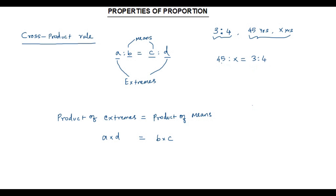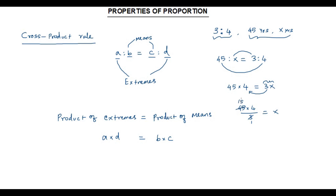We can apply the cross product rule to find the value of X. The product of extremes is 45 times 4, which is equal to the product of means, that is X times 3, giving us 3X. My aim is to get the value of X, so I bring 3 to the left side of the equation, making it division. We get 45 times 4 divided by 3 equals X. Simplifying: 3 goes into 45 fifteen times, and 15 times 4 gives 60. So X is equal to 60, meaning the age of the second person is 60 years.